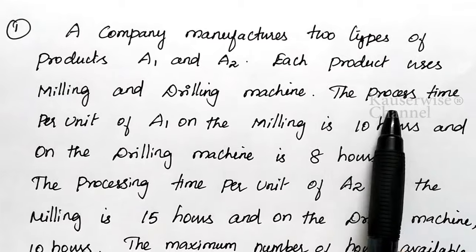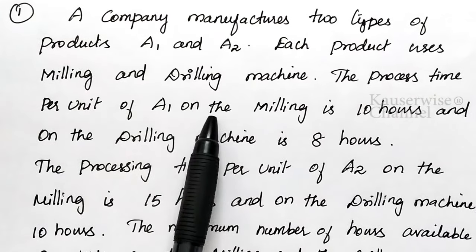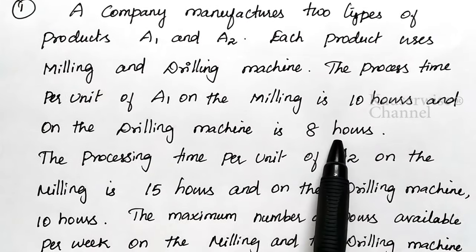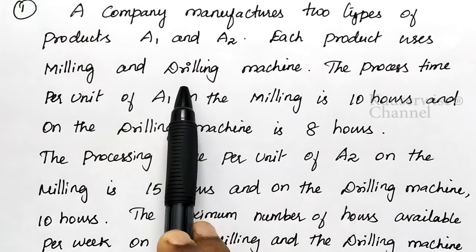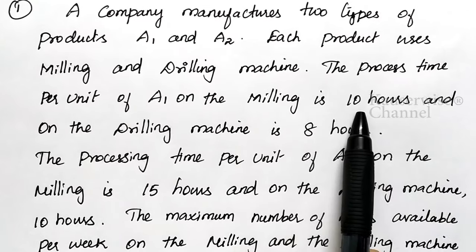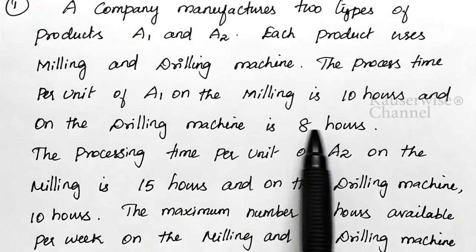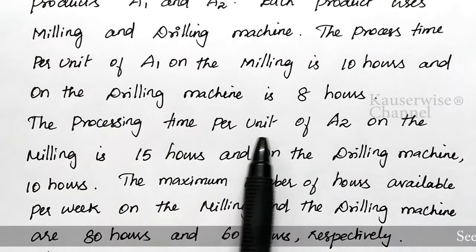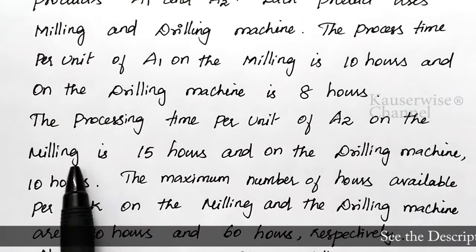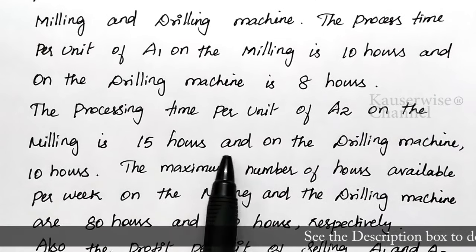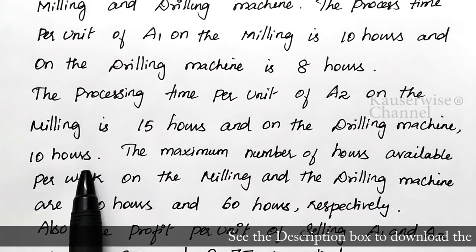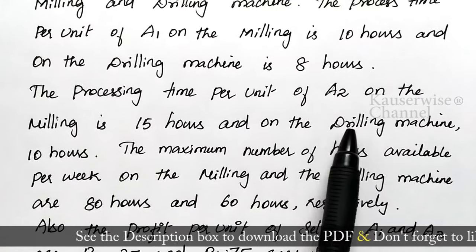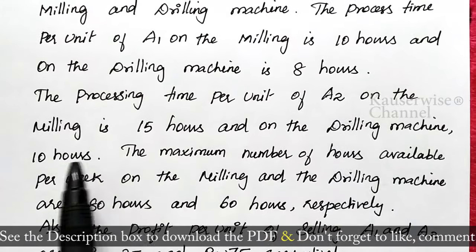The process time per unit of A1 on the milling machine is 10 hours and on the drilling machine is 8 hours. The processing time per unit of A2 on the milling machine is 15 hours and on the drilling machine is 10 hours.